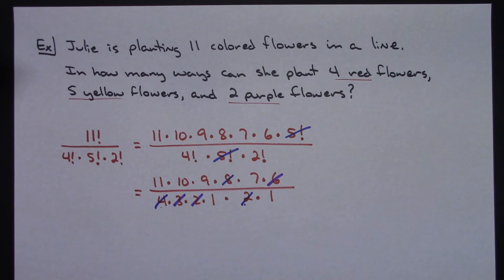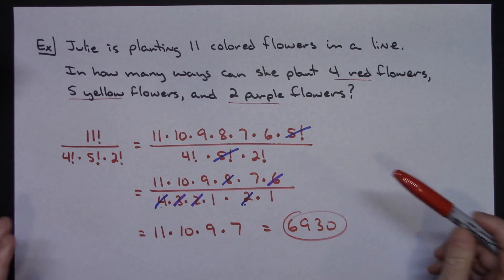Getting this down to a pretty small number now. So now we've got just a 1 on the bottom. Across my top I've got an 11 times 10 times 9 times 7, and that's going to be a total of 6,930. So there's 6,930 ways that Julie can plant the flowers in a line.